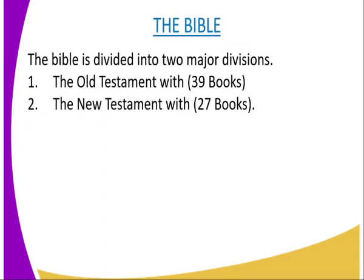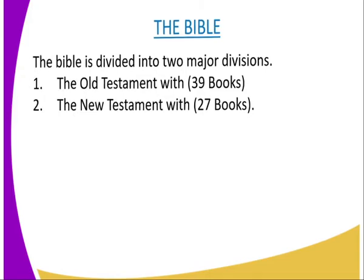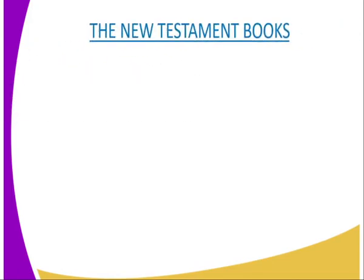Remember we said the Bible is divided into two major divisions: the Old Testament, which has 39 books, and the New Testament, which has 27 books. In the previous lesson, we looked at the categories of books in the Old Testament. So today we are going to look at the New Testament books, and we say it has 27 books.